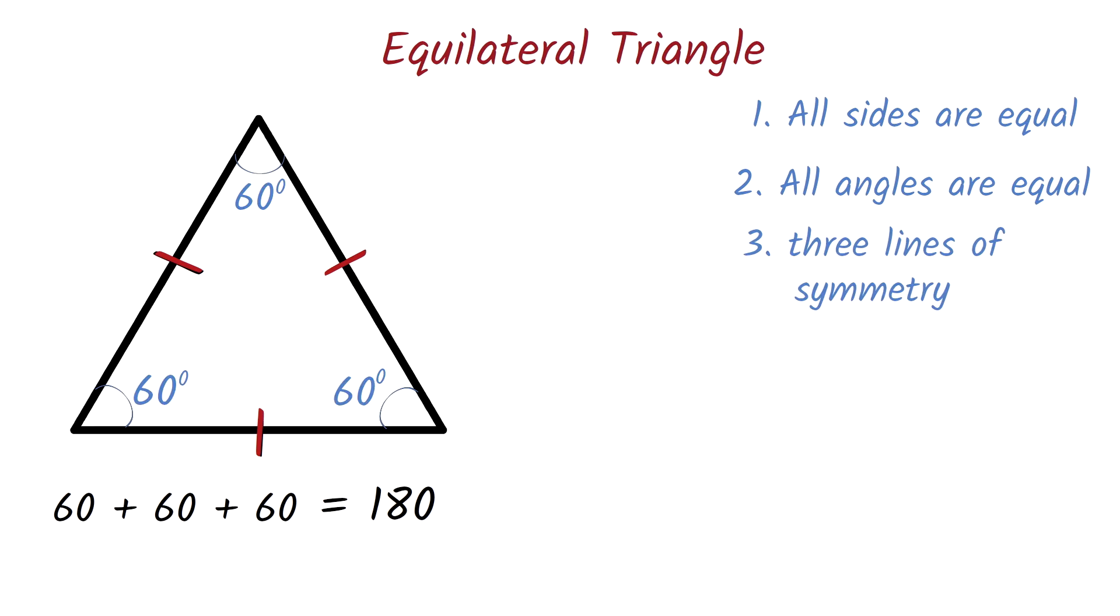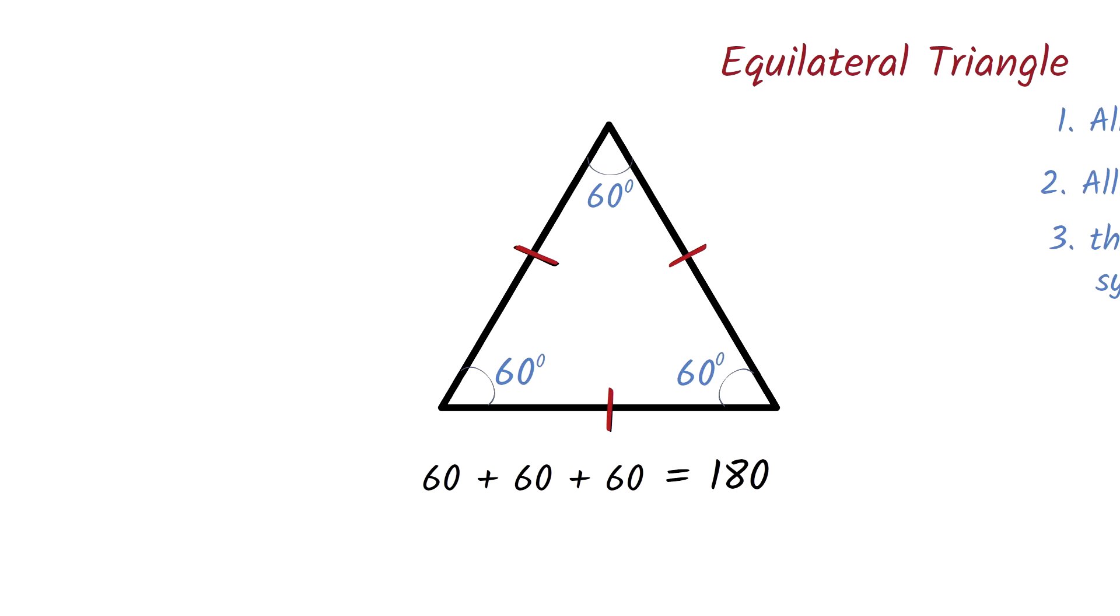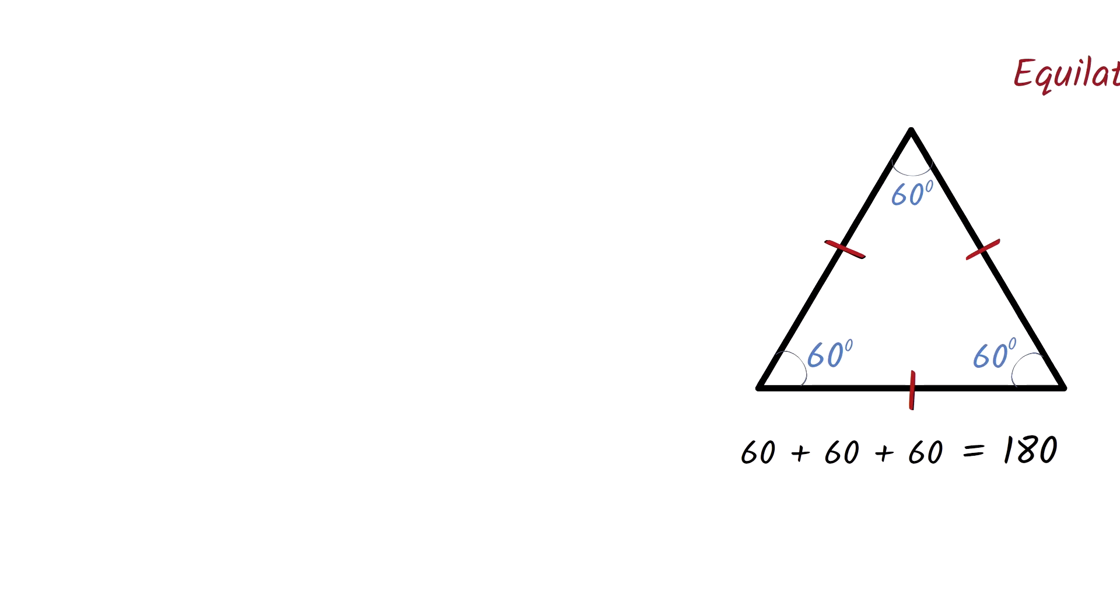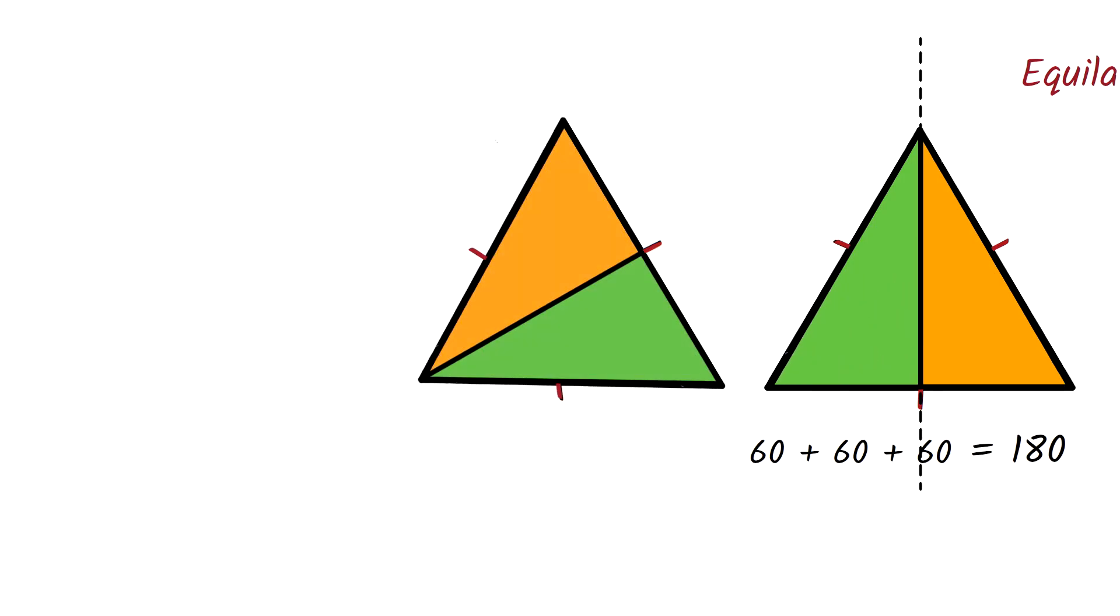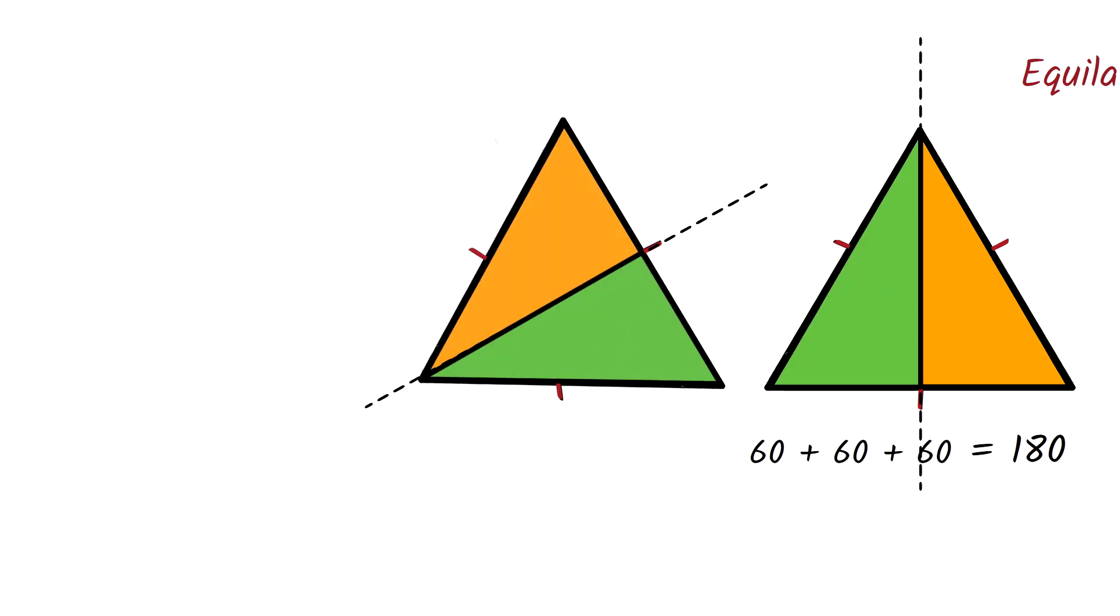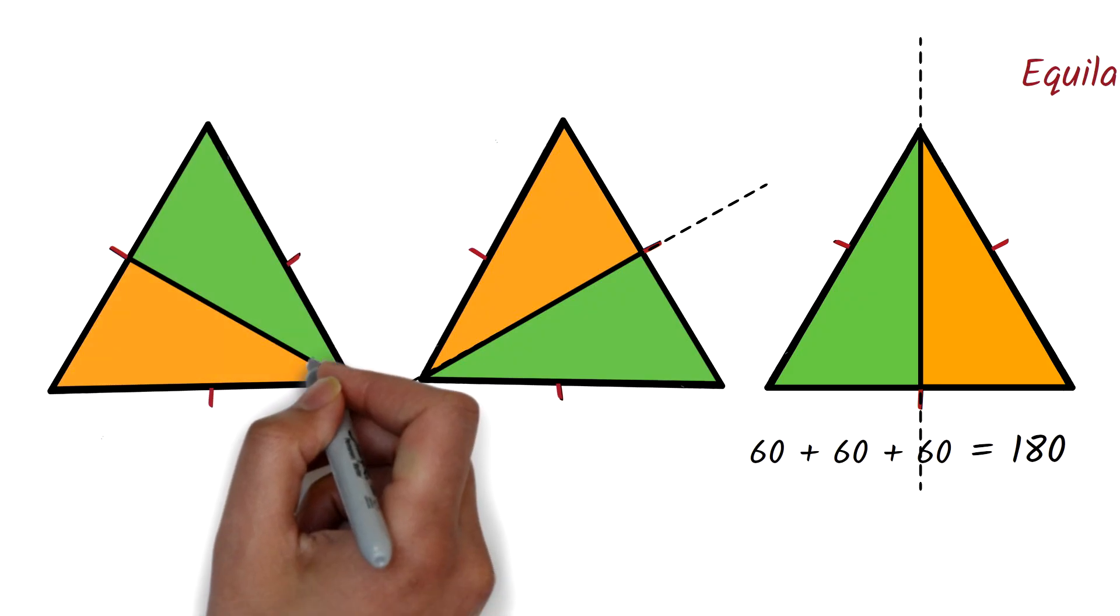It has three lines of symmetry. A line of symmetry is basically a line that divides a figure into two mirror images. So in this figure, we can see that if we draw a line through it this way, then this side A will be a mirror image of this side B. We will get a mirror image if we draw a line through this side and get a mirror image if we draw a line through here also.